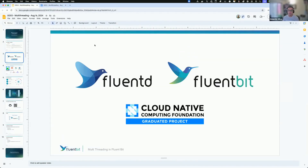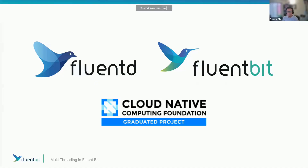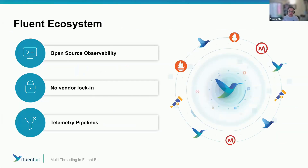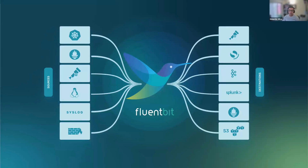As a reminder, Fluentd and FluentBit are both graduated projects from the CNCF, which means we've been around for a while and are fully production-grade. As you can see in the landscape, we are together with Prometheus, Jaeger, and Cortex, and I think this year OpenTelemetry is going to graduate too. FluentBit and Fluentd are an open ecosystem — we try to play well and integrate with others, providing a unique experience where users don't face vendor lock-in.